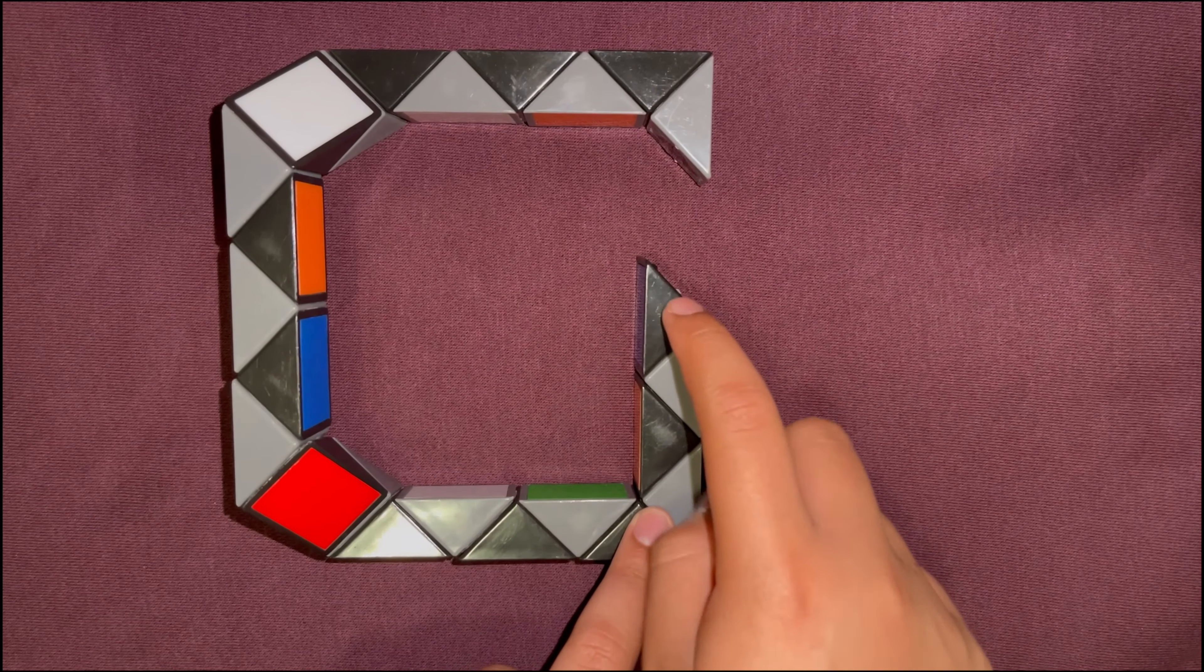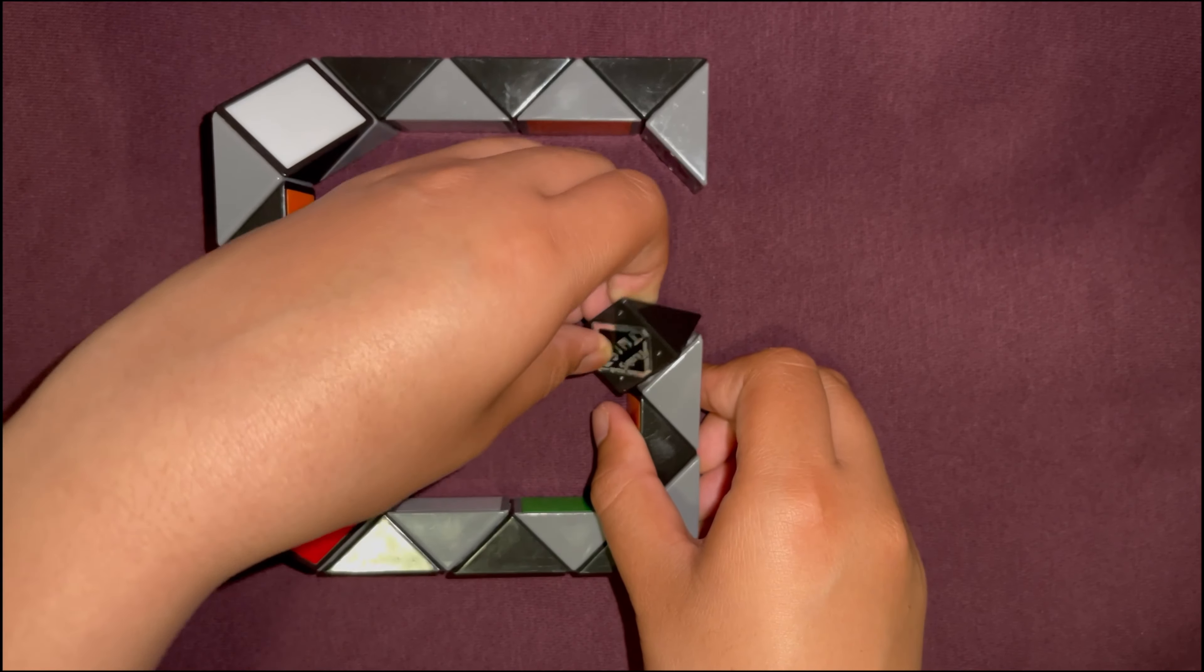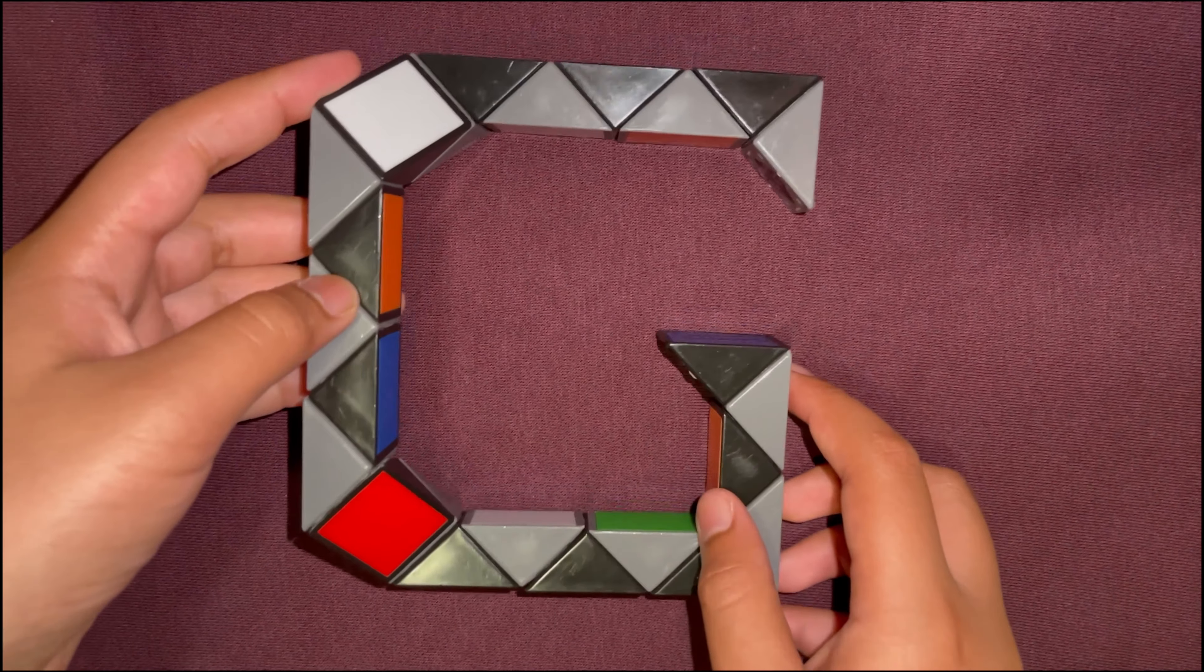Now you're going to count one, two, three, and turn the final block two times, and there you go, you have the capital letter G.